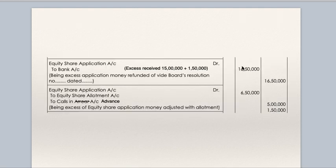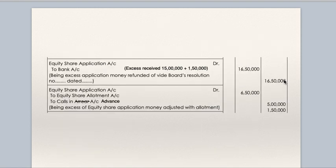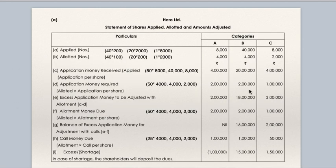Equity share application to bank — excess money refunded. From the table, category B excess is 15 lakhs and category C excess is 1 lakh 50,000; total excess is 16 lakhs 50,000. So equity share application to bank, 16,50,000 is refunded. Equity share application account debit 6,50,000 — to equity share allotment and to calls in advance. Allotment is 5,00,000 and calls in advance is 1,50,000. Entire allotment of 5 lakhs was received with application.